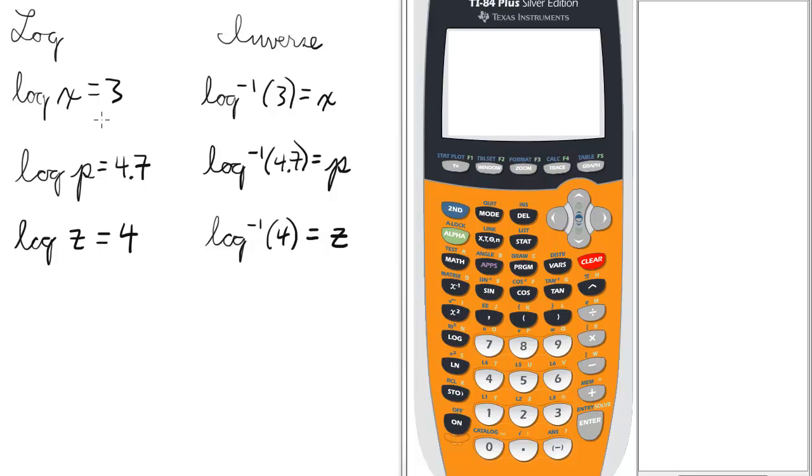So if we have log x equals 3, the inverse form of this would be inverse log of 3 equals x.